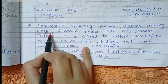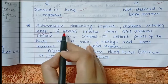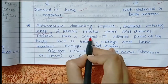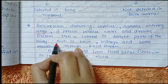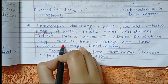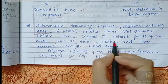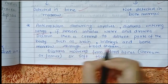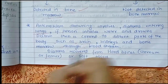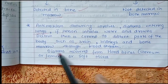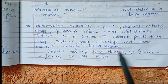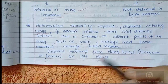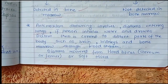Antemortem drowning involves diatoms entering the lungs via breathing. If the person inhales water and drowns, diatoms are carried to distant parts of the body via circulation — such as the brain, kidney, and bone marrow — all through the bloodstream. Diatoms recovered from bones such as the sternum and femur, or from soft tissue, can also be observed in such cases.